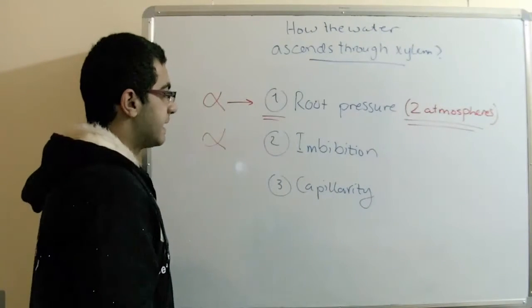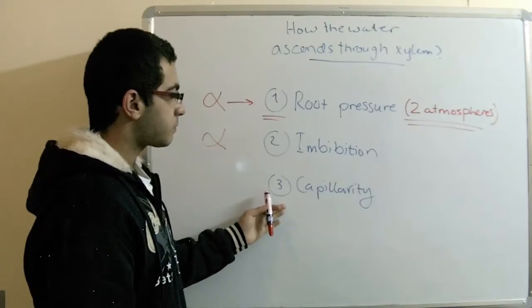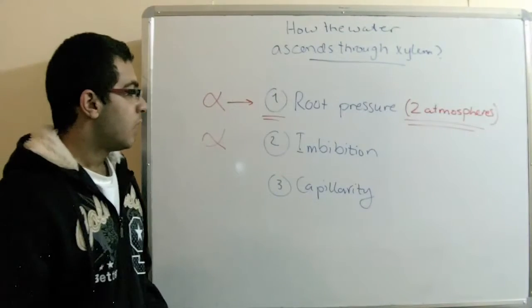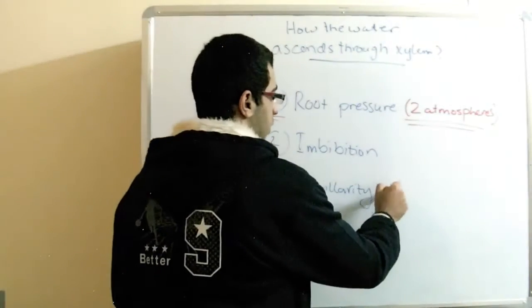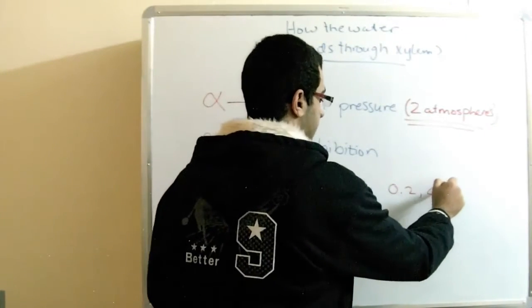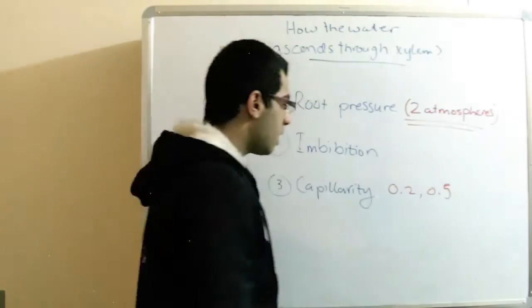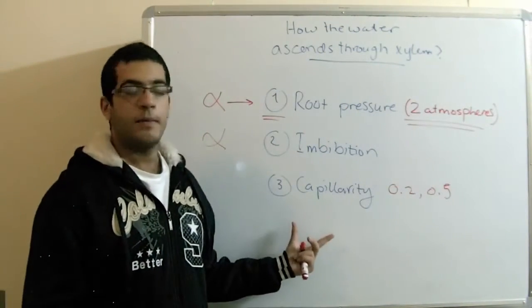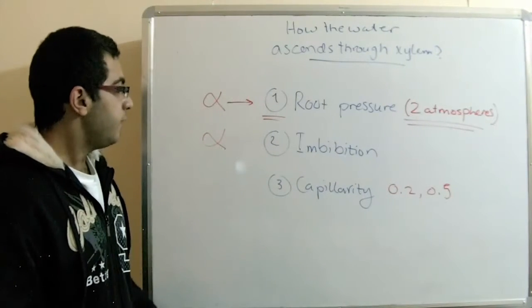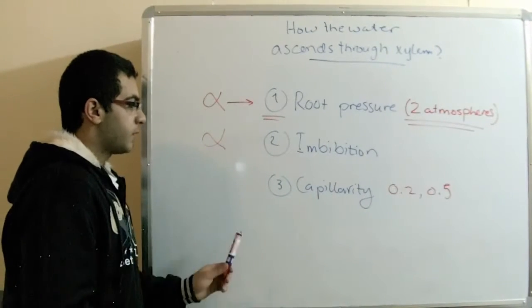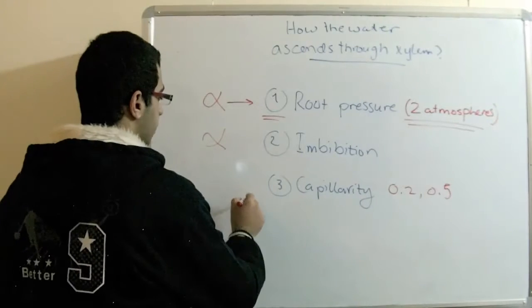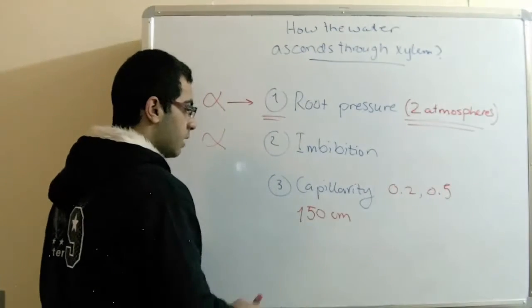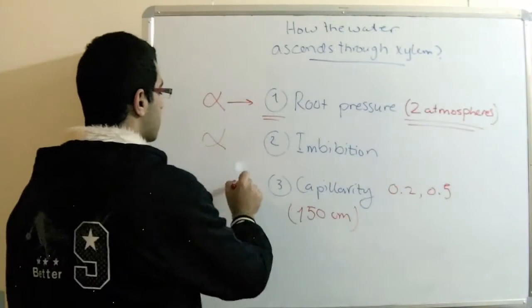The third is the capillarity. The capillarity is the ascent of water through the tubes, which range from 0.2 to 0.5 mm of diameter. But if you know that fine capillarity can only lift the water for 150 cm only, so this one is also insufficient.